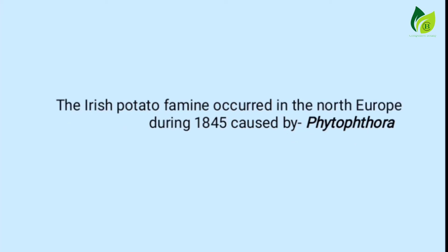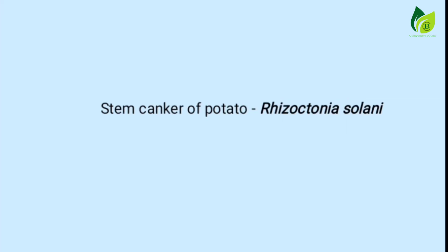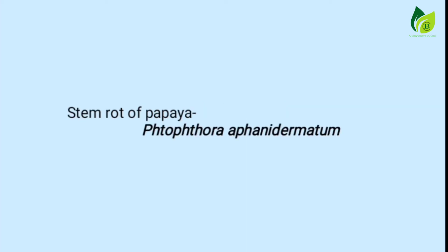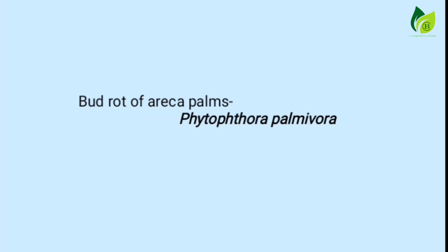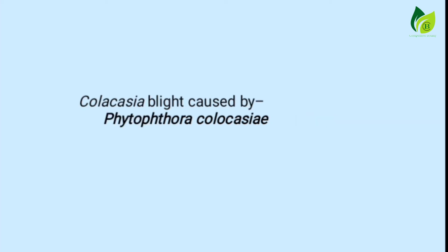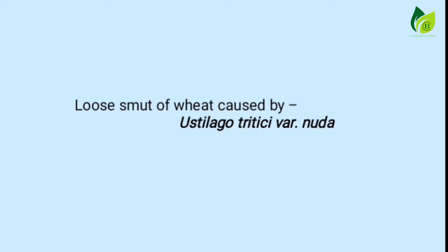Irish potato famine occurred in north Europe during 1845, caused by Phytophthora. Stem canker of potato caused by Rhizoctonia solani. Stem rot of papaya caused by Phytophthora aphanidermatum. Bud rot of areca palms caused by Phytophthora palmivora. Kolacasia blight caused by Phytophthora colocasiae. Loose smut of wheat caused by Ustilago tritici variety